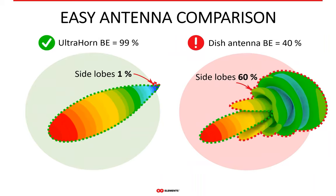If you want to compare two antennas in terms of side lobe performance, beam efficiency makes it extremely simple — the higher number wins. In this example, the Ultra Horn has beam efficiency of 99%, so it's only 1% short of perfection. On the other hand, the generic dish antenna has beam efficiency of 40%, so the remaining 60% of the energy it radiates is in the side lobes. 99% is clearly more than 40%, and that's why the Ultra Horn is a way better antenna in terms of noise suppression — in our opinion, actually the best on the market.